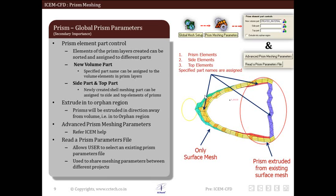The next option is read a prism parameters file. Prism parameters can be written in file and then same can be used in different projects. This saves the time while meshing similar geometries.